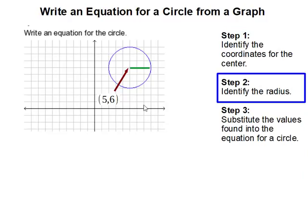Step 2: Identify the radius. The radius is the distance from the center of the circle to the edge, and in this case, it is 3.